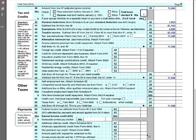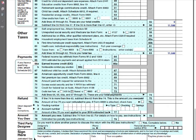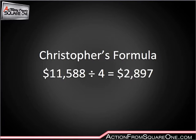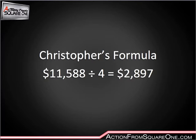We now have arrived at the total tax — $11,588. This is the amount Christopher can use to figure out his formula. Christopher is going to take $11,588 divided by four, which is the number of quarterly estimated payments he needs to make. He will need to make four equal payments of $2,897, sent in once every three months. I hope you guys are seeing what I mean when I talk about taking those considerations — as we can see, it changes things drastically.